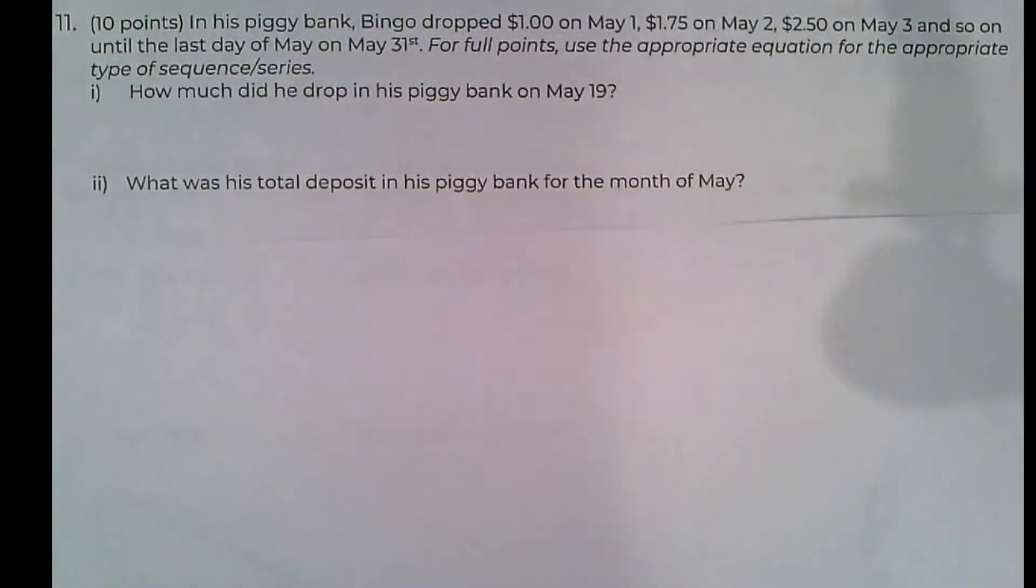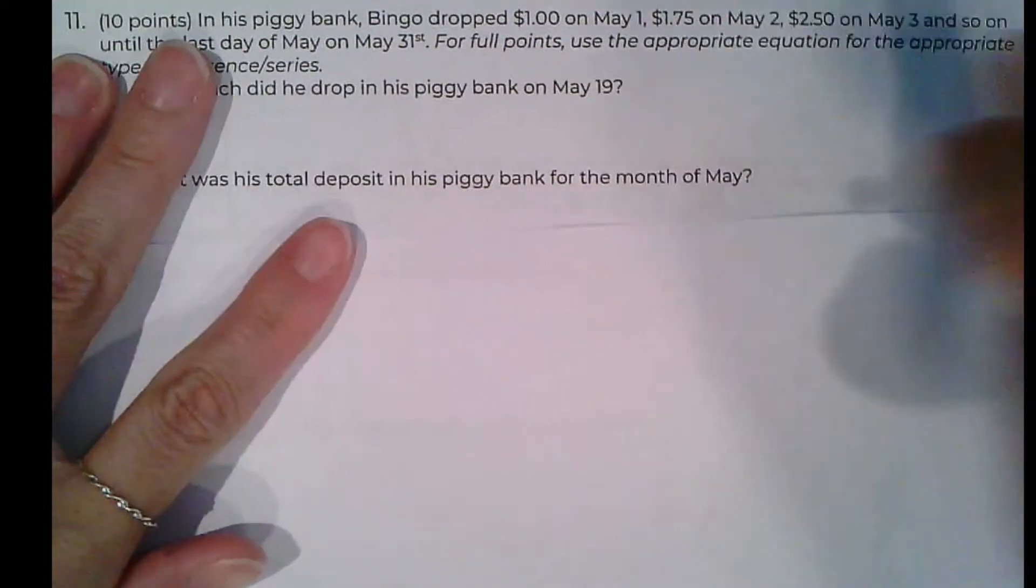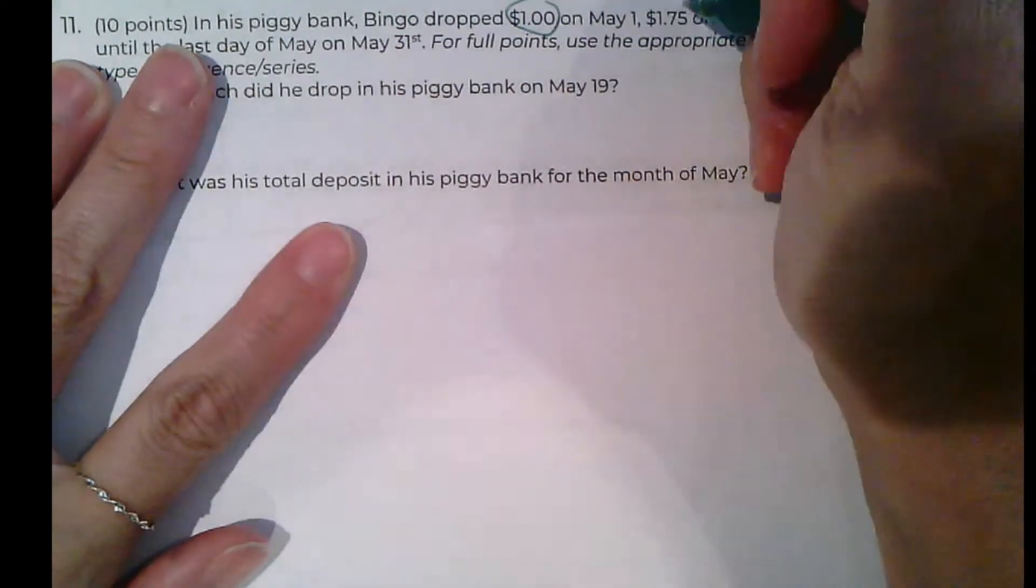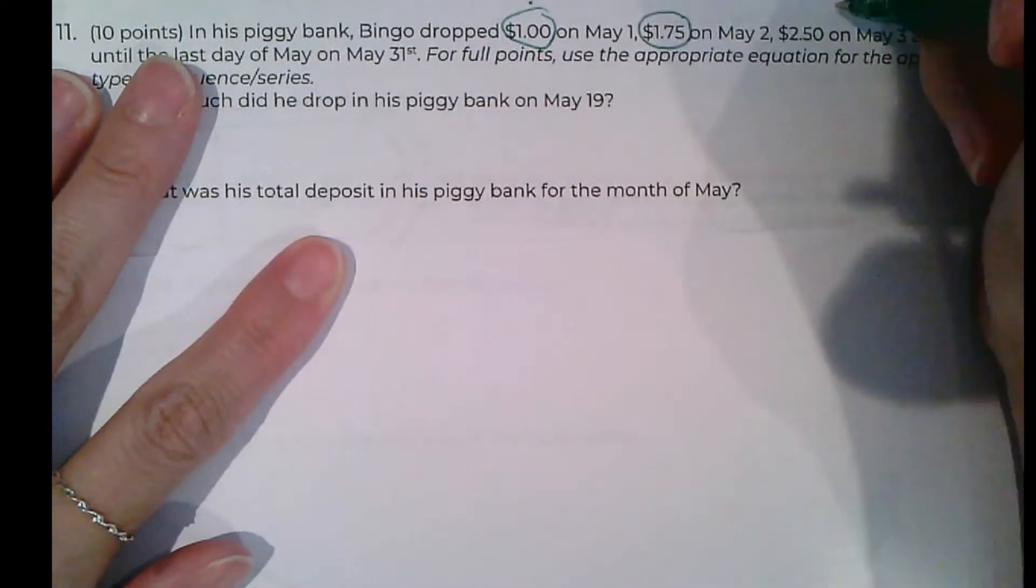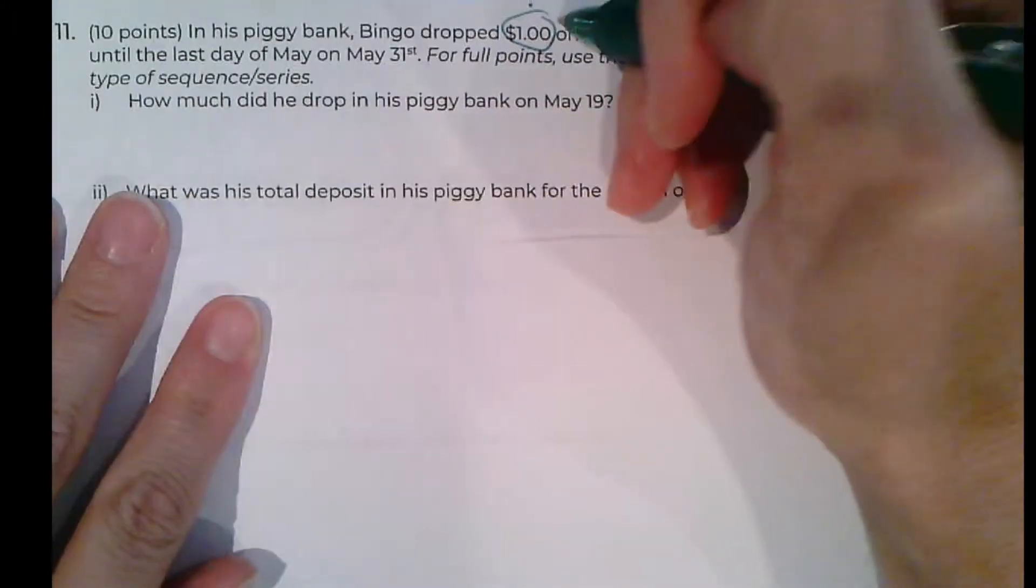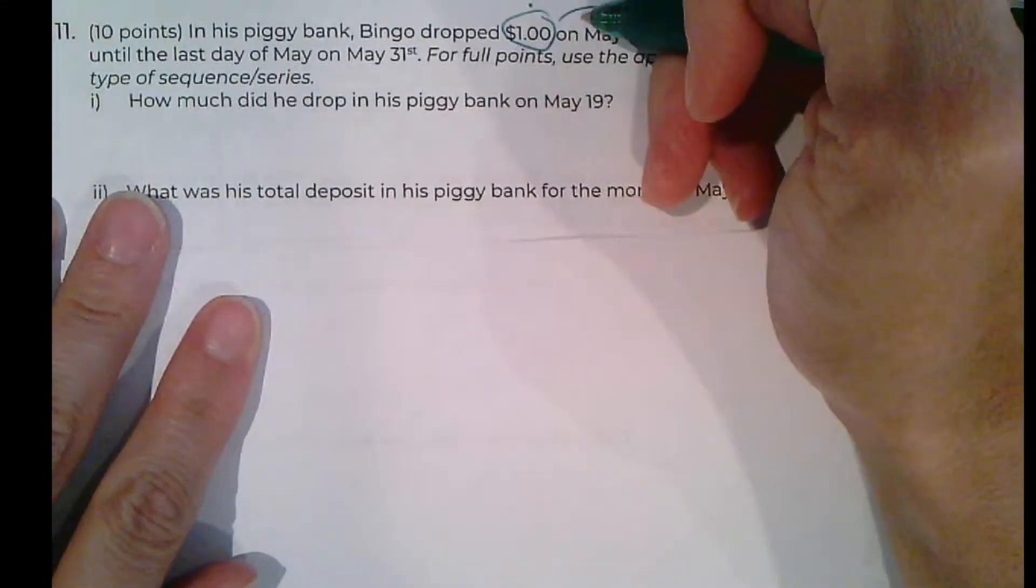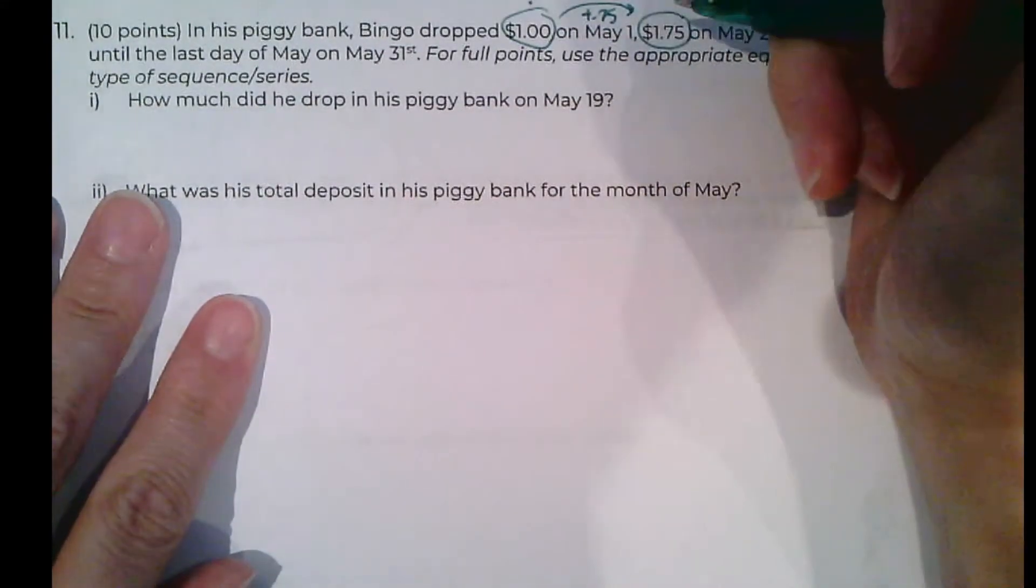Alright, so number 11. Another one where we use the appropriate equation for the type of sequence series. We can see our little list. We have a piggy bank and the guy dropped in $1, then $1.75, and then $2.50. If we start looking for our pattern, especially because we know it's got to be one of the basic ones because it says to use a formula.